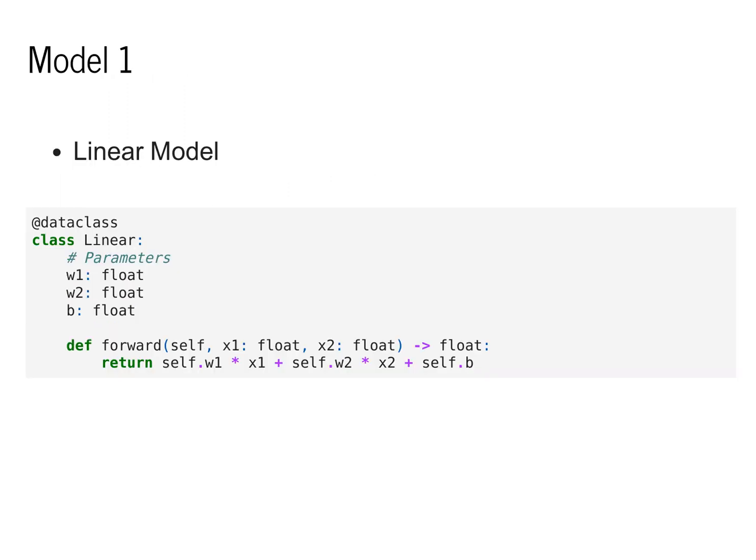We can also use models that contain their own parameters. For the convention in this lecture, I'll use a Python data class to represent the parameters. However, you could also think about this as using a full-on mini-torch module. This particular linear model contains three parameters: W1, W2, and B.